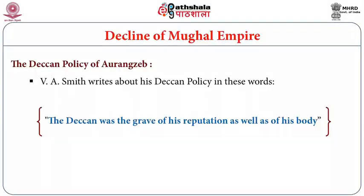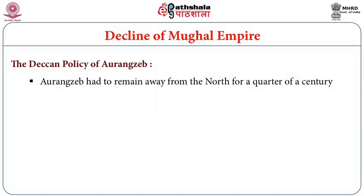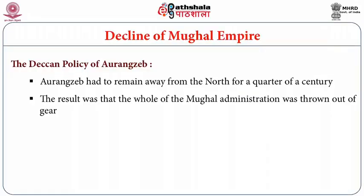V. A. Smith wrote about the Deccan policy: 'Deccan was the grave of his reputation as well as his body.' Aurangzeb ruled for nearly 50 years and spent 25 of those years in the Deccan, dealing with Bijapur, Golcunda, and the Marathas. The result was that the whole Mughal administration was thrown out of gear because of his prolonged absence from the north.